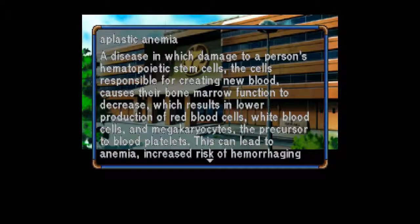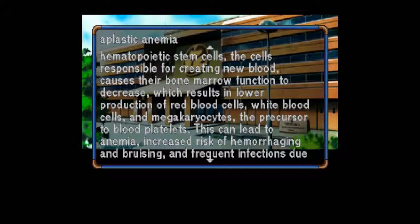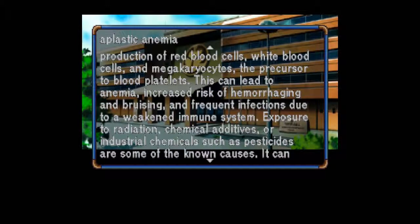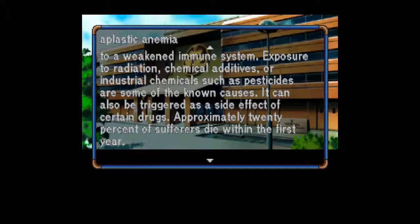Aplastic Anemia: I'm not going to know how to say half this stuff. A disease in which damage to a person's hematopoietic stem cells — the cells responsible for creating new blood — causes their bone marrow function to decrease, which results in lower production of red blood cells, white blood cells, and megakaryocytes, the precursor to blood platelets. This can lead to anemia, increased risk of hemorrhaging and bruising, and frequent infections due to a weakened immune system. Exposure to radiation, chemical additives, or industrial chemicals such as pesticides are some of the known causes. It can also be triggered as a side effect of certain drugs.